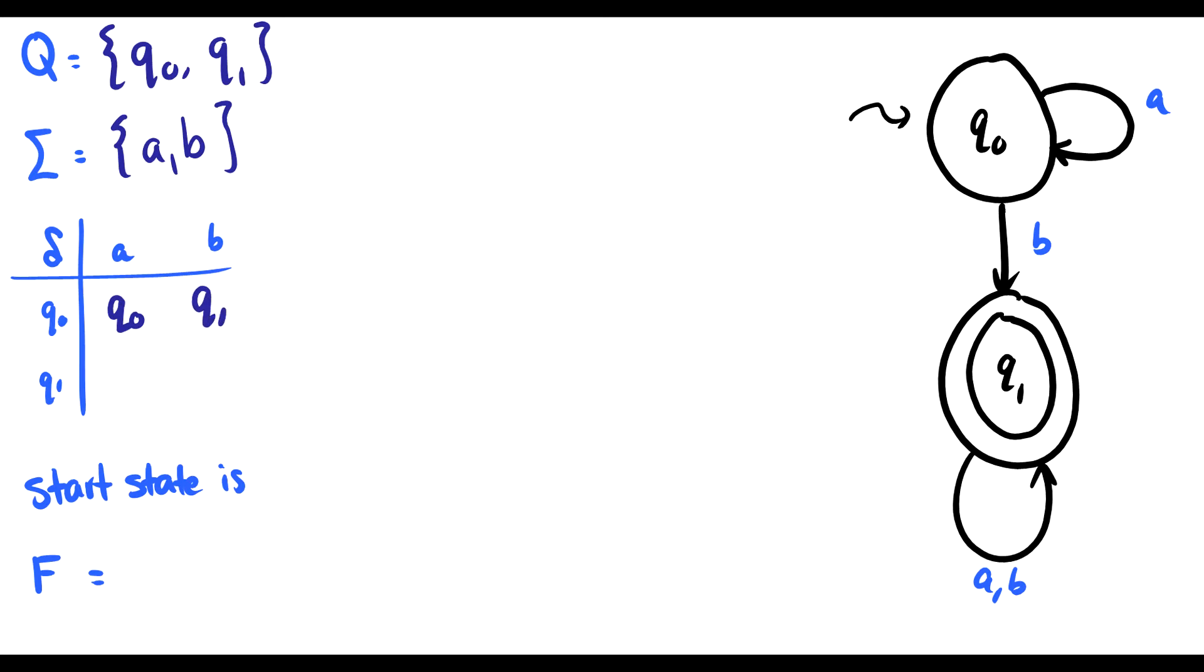If we do Q1 and A, we get mapped back to Q1. And if we do Q1 and B, we also go back to Q1. So that's the transition function.